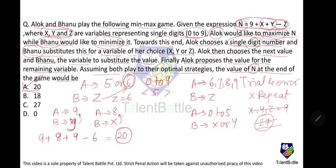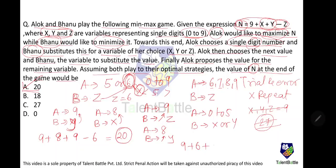If Banu had assigned x = 6 instead of z = 6, then when Alok says 9, Banu would assign z = 9. Alok then says 8 and Banu assigns y = 8. The result would be n = 9 + 6 + 8 − 9 = 14, which is lower. So Banu's optimal strategy when Alok picks 6 is to always assign z to it, ensuring the maximum number gets subtracted and n is minimized.